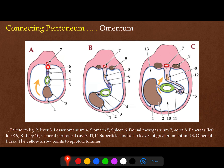We have here the dorsal mesogastrium and the ventral mesogastrium. In the dorsal mesogastrium, the spleen will develop, and in the ventral mesogastrium, the liver will develop. The part of the mesentery between the stomach and the liver is called the lesser omentum. The part of the mesentery between the stomach and the dorsal body wall will become the greater omentum.